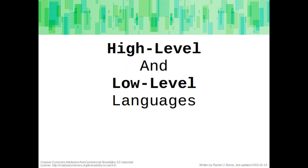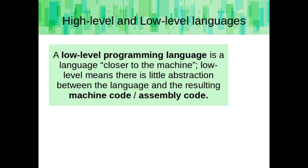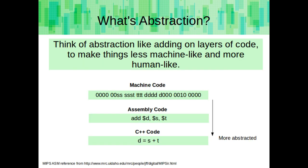Now a little bit about programming in general. A low-level programming language is a language closer to the machine. Low-level means there is little abstraction between the language and the resulting machine code or assembly code. Think of abstraction like adding on layers of code to make things less machine-like and more human-like, or human-readable.